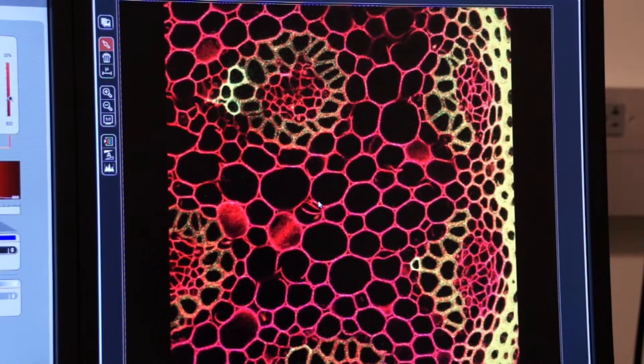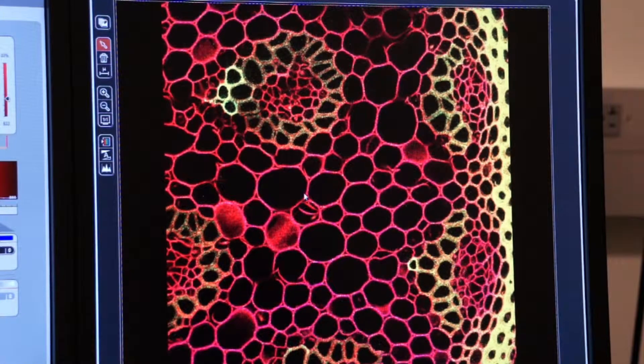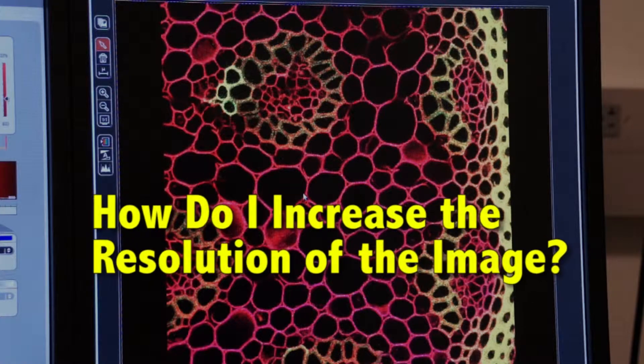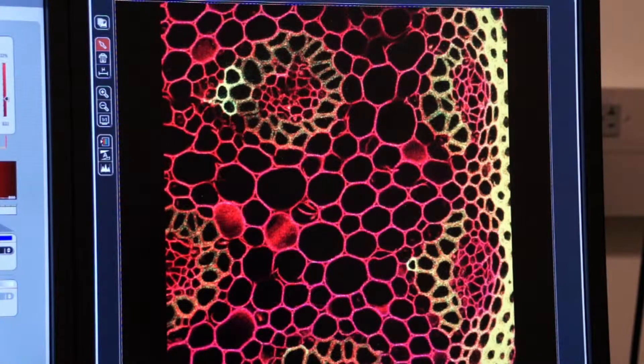So that's a 512 by 512 image. How do I increase the resolution of this image? There are several ways to do it.